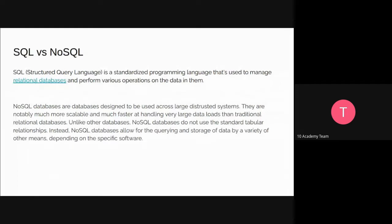So what is the difference between SQL and NoSQL? SQL stands for Structured Query Language — it's the standard programming language used to manage relational databases, which have columns, rows, and tables, and we perform various operations on this data. In NoSQL databases, they are typically designed to avoid the traditional row and column structure, and they are designed to be used across large distributed systems. SQL databases are mainly used in a centralized system.